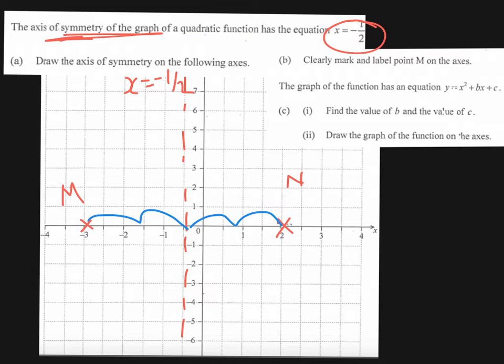We are then told the graph of the function has an equation of the form y equals x squared plus bx plus c. So what is important to recognize here is that the coefficient of x squared is 1. So it's a fairly straightforward instance of a quadratic because we should be able to interpret intercept form from the quadratic.